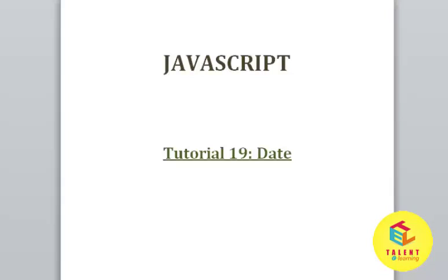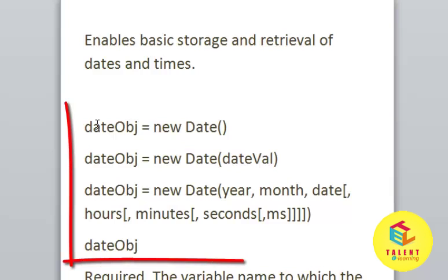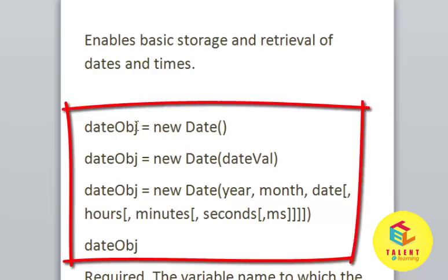Hello friends. Welcome to this JavaScript tutorial. In this tutorial we are going to learn about the Date object. The Date object enables basic storage and retrieval of dates and times. Here this is the simple syntax of how to use the Date object — dateObj is the name of the variable and we have assigned the Date object to this variable. If we want to pass some parameter value, we can pass it through the parameter.